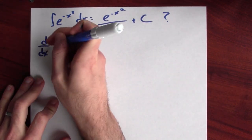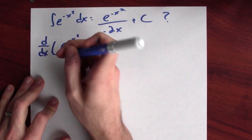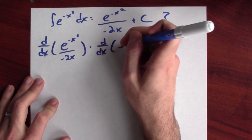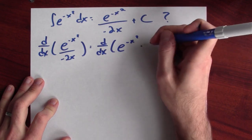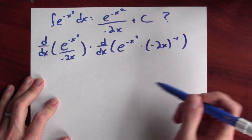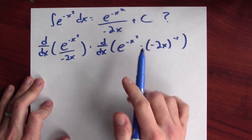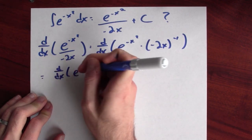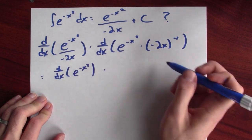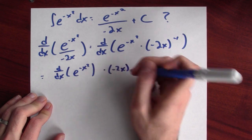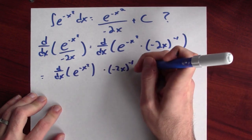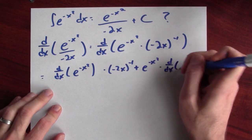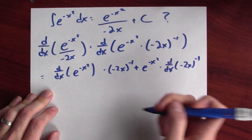So let's differentiate e to the minus x squared over minus 2x. That's really the same thing as differentiating e to the minus x squared times minus 2x to the negative first power. So that's the derivative of a product, which is the sort of thing the product rule is good for. First, I'll differentiate e to the minus x squared and multiply that by the second term, minus 2x to the minus first power. And I'll add to that the first term, e to the minus x squared, times the derivative of the second term, minus 2x to the minus first power.